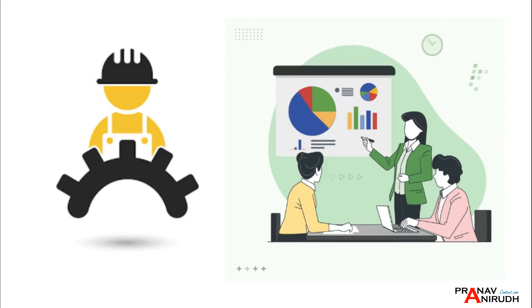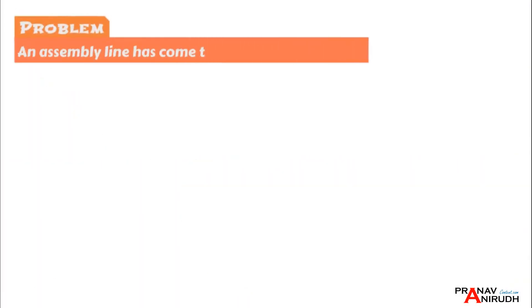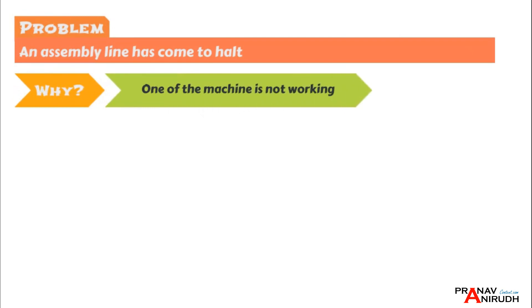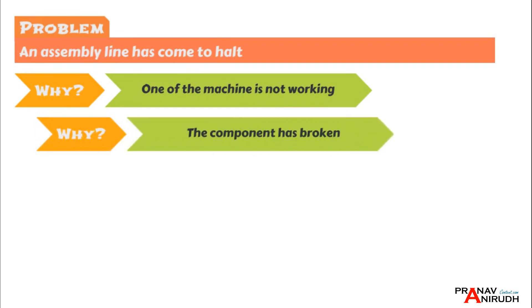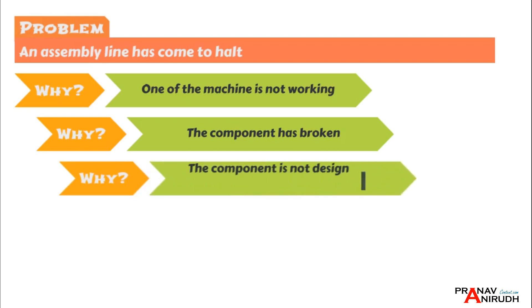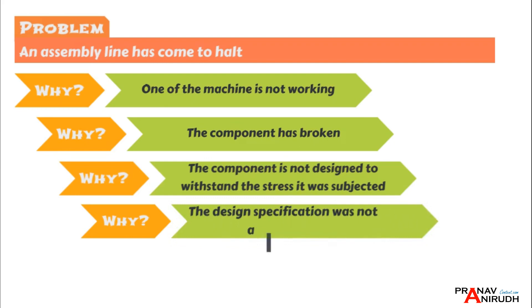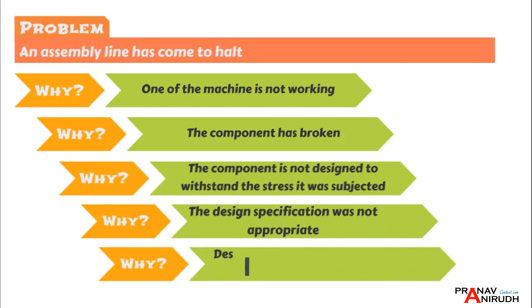For a better understanding of the 5-Why, consider this example: there is a problem of an assembly line halt. Why has the assembly line come to a halt? Because one of the machines is not working. Why is the machine not working? Because a component has broken. Why has the component broken? Because it was not designed to withstand the stress it was subjected to. Why was the component not designed to withstand the stress? Because the design specification was not appropriate. Why was the design specification not appropriate? Because the design team did not consult the manufacturing team before finalizing the specification.